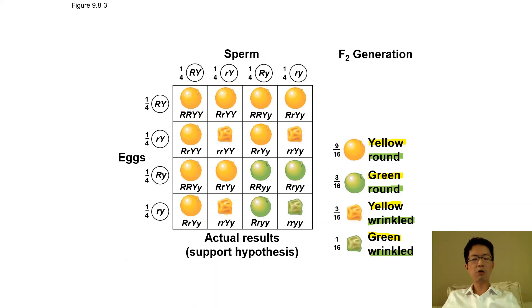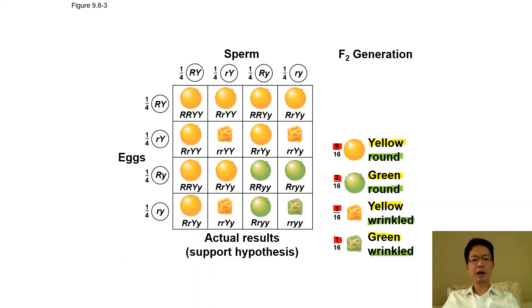I will not ask you to do a dihybrid cross in the exam — I will only ask you to do a monohybrid cross using a Punnett square with four cases. However, you do need to memorize the phenotypic ratio of the dihybrid cross, which is 9:3:3:1. You do not need to memorize the genotypic ratio.